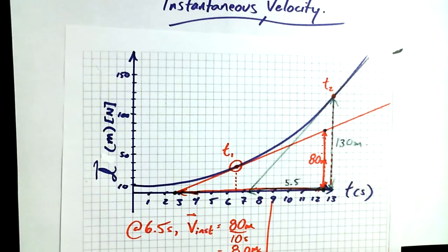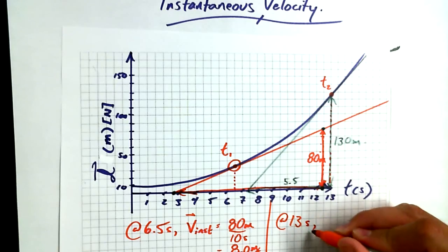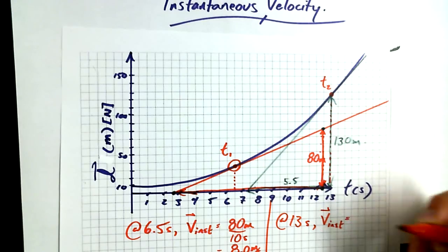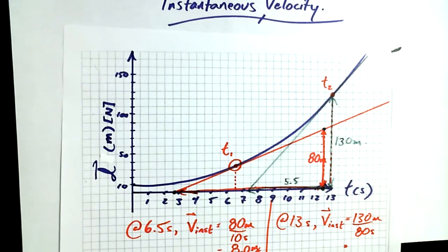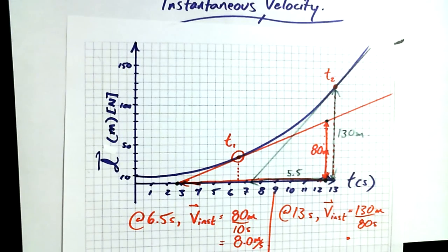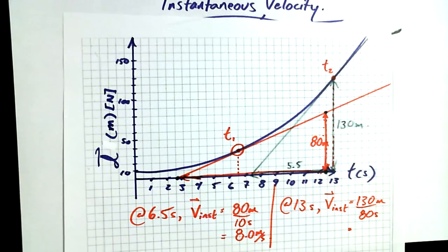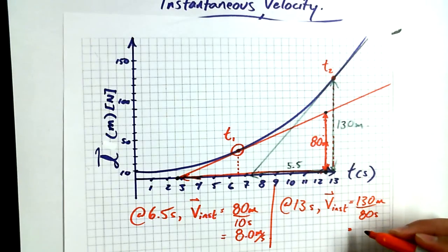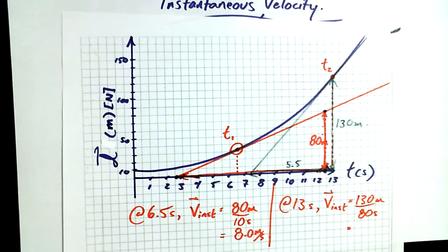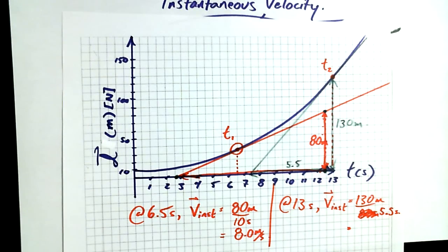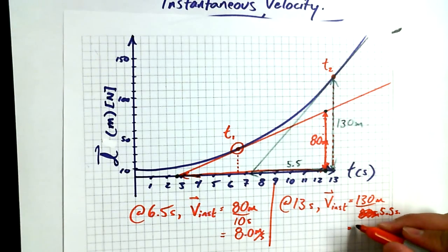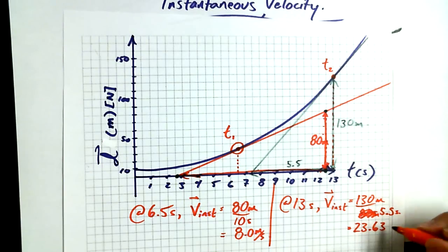So if I find V instantaneous at 13 seconds, V inst equals rise over run for the rate triangle: 130 meters over 5.5 seconds. 130 divided by 5.5 gives approximately 23.64 meters per second. So at 13 seconds, your velocity is instantaneously about 23.64 meters per second.